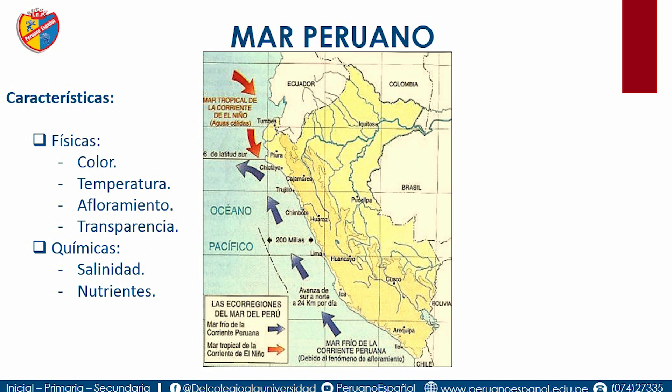En la transparencia, en las aguas del mar tropical hay menor cantidad de nutrientes, por lo tanto sus aguas son claras. En las aguas del mar frío hay gran cantidad de nutrientes, por lo tanto sus aguas son opacas. En cuanto a las características químicas: la salinidad es mayor en el mar frío y menor en el mar tropical. Los nutrientes están en el mar frío.